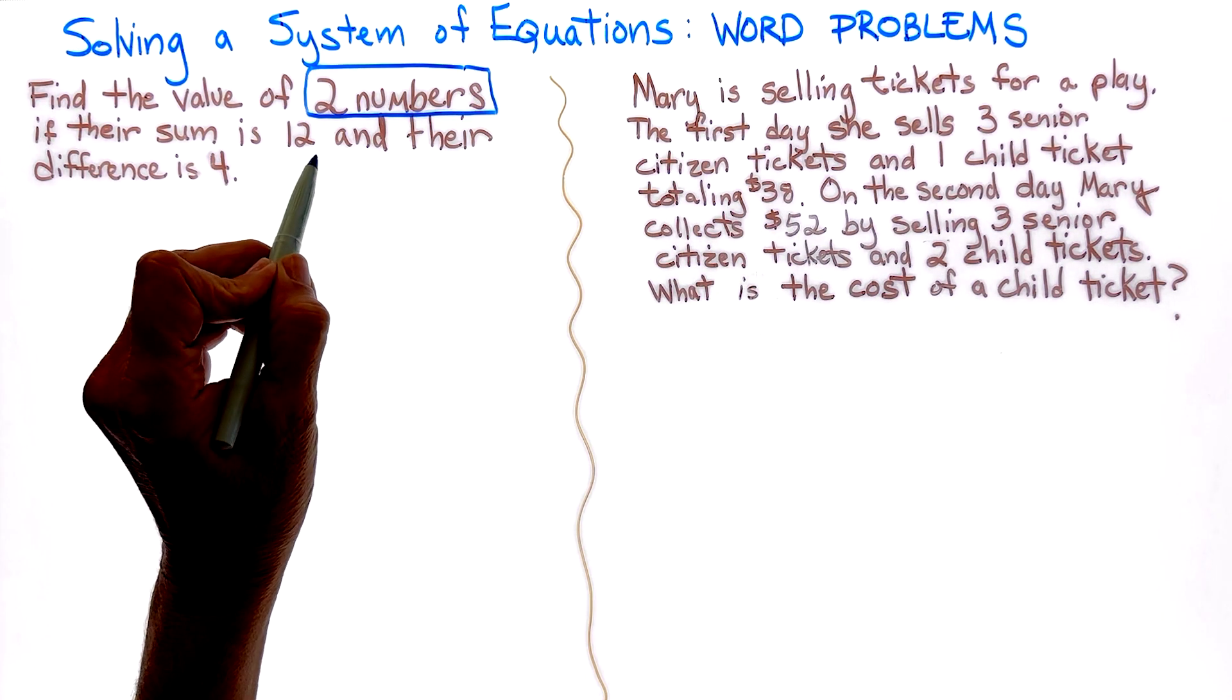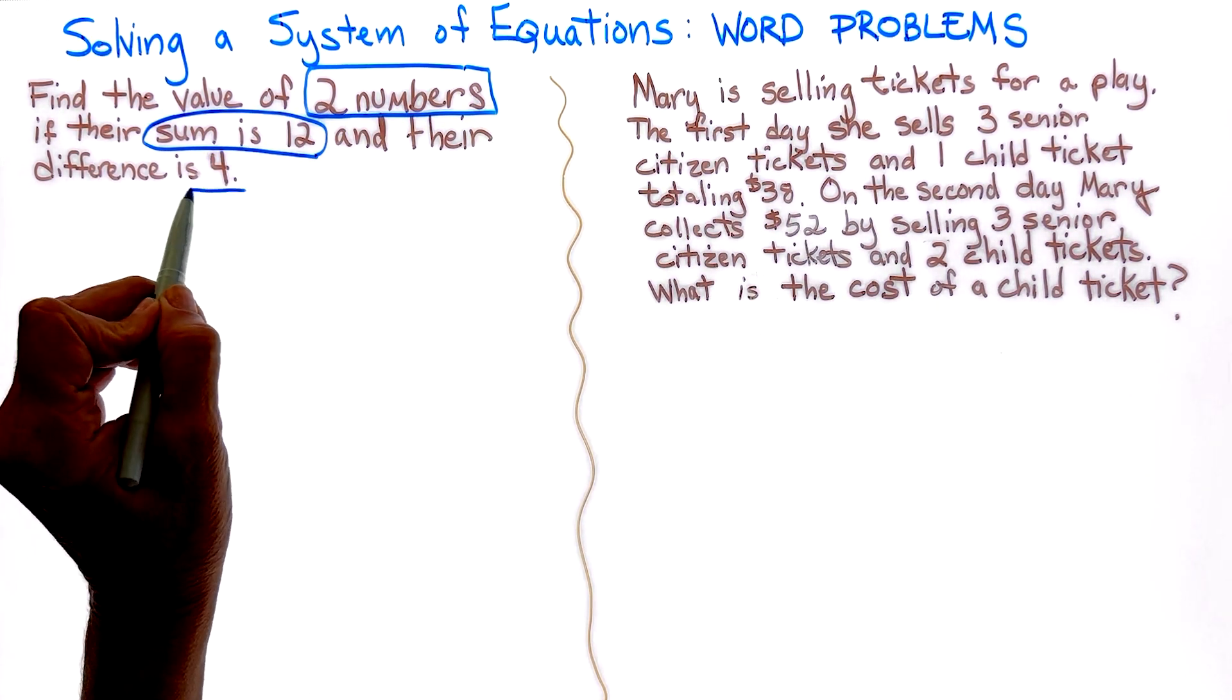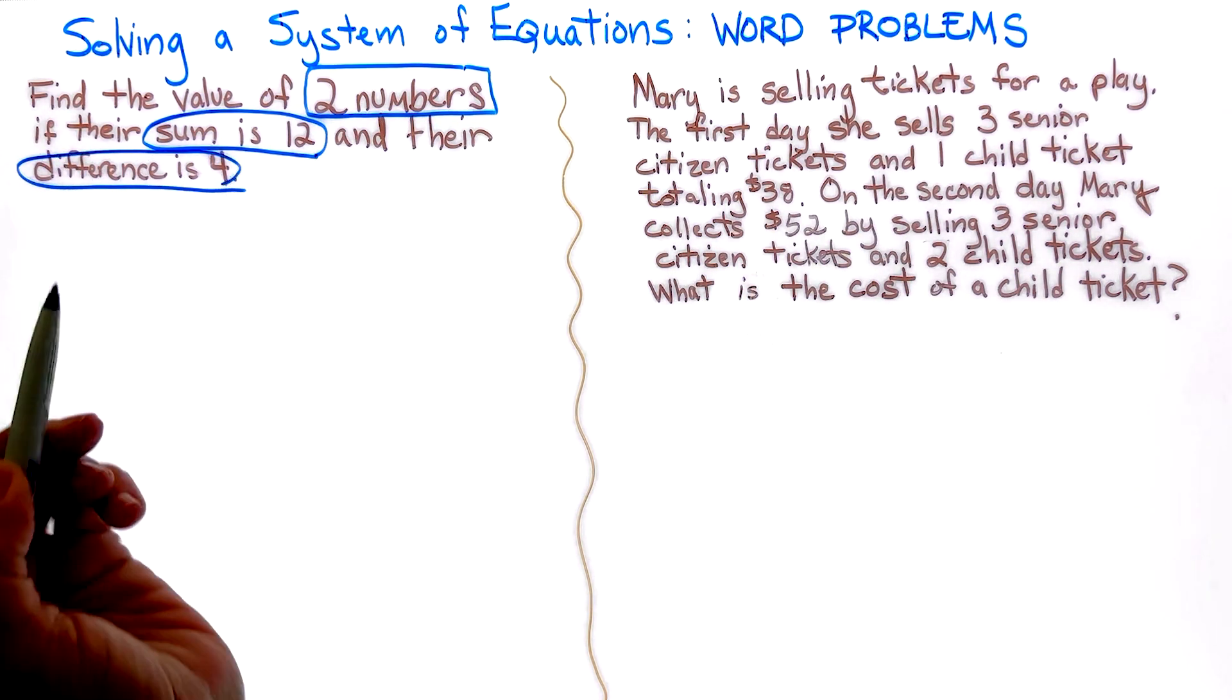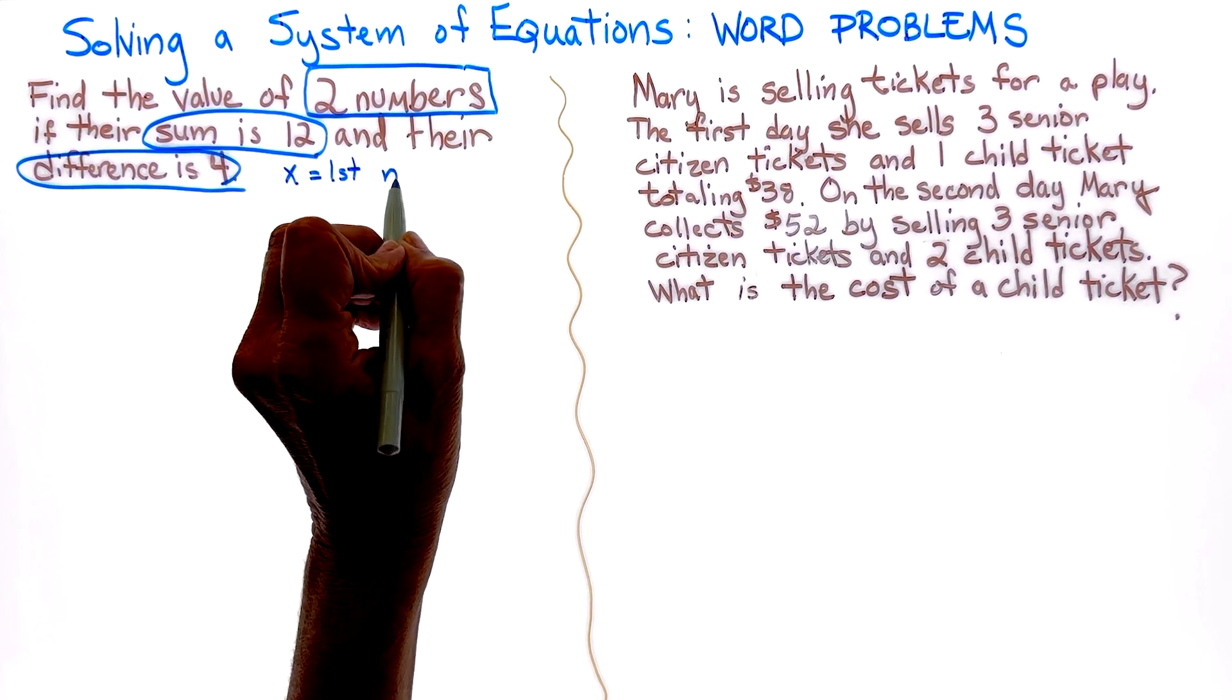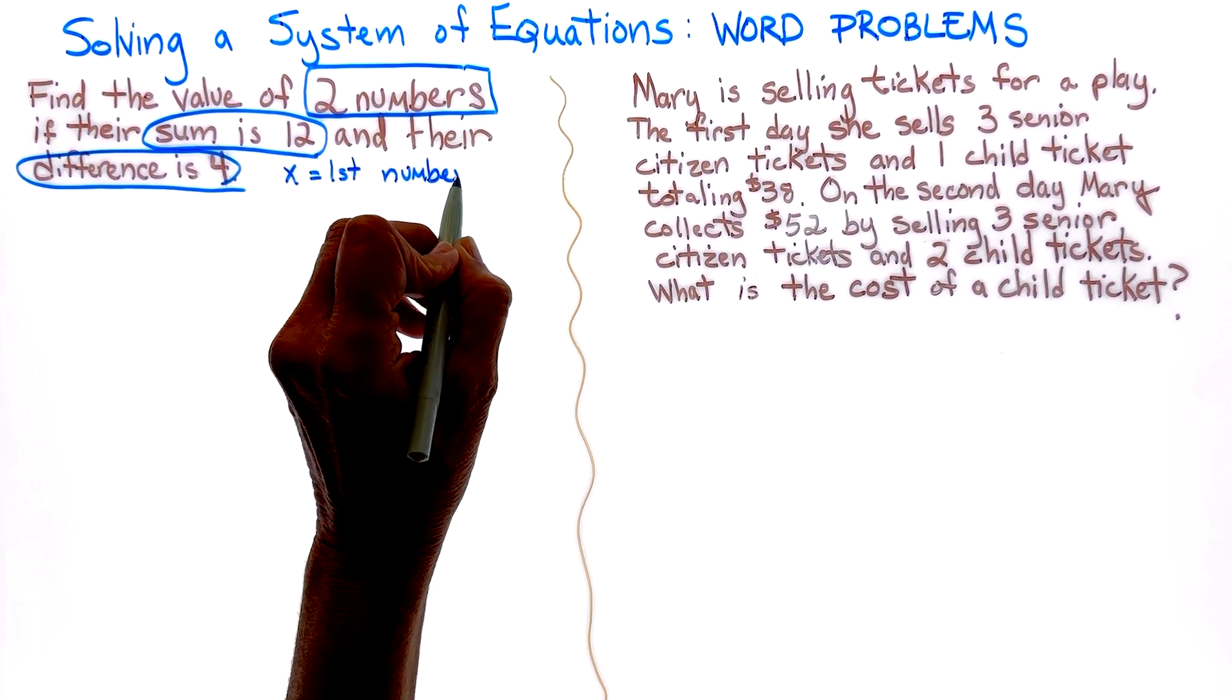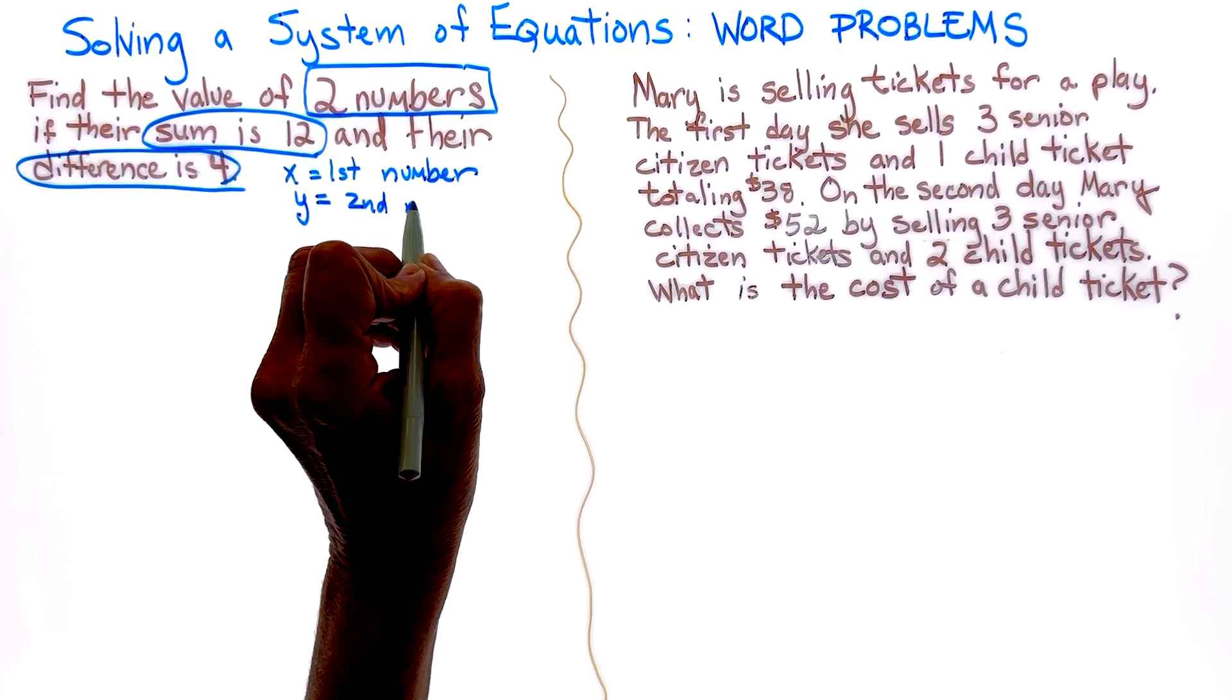Their sum is 12, but their difference is 4. So let's make x is equal to the first number, and y is equal to the second number.